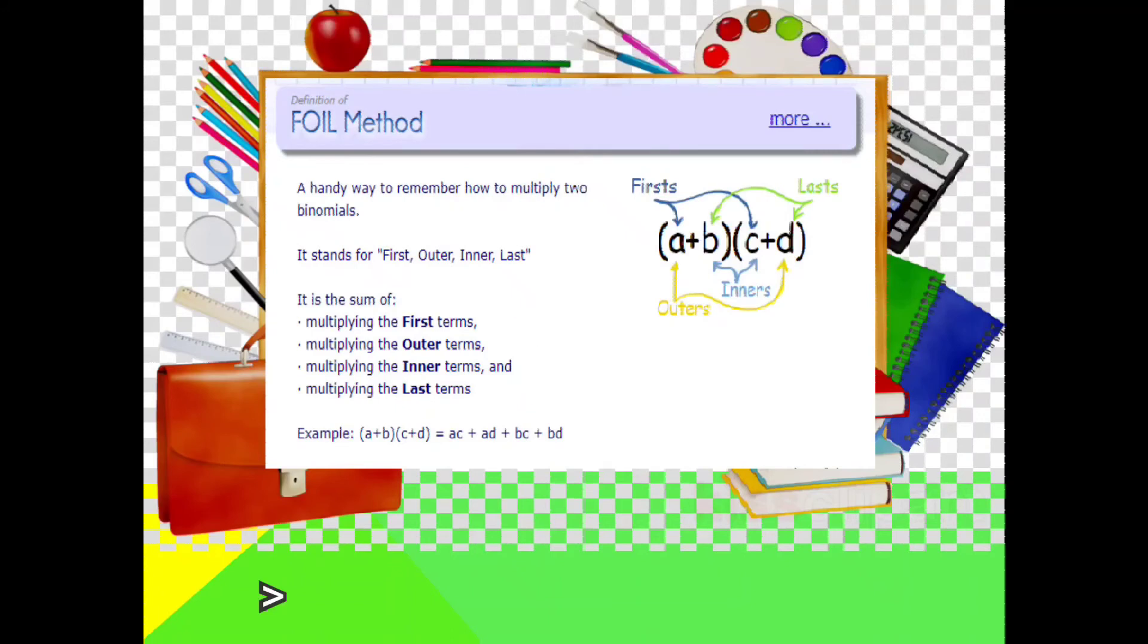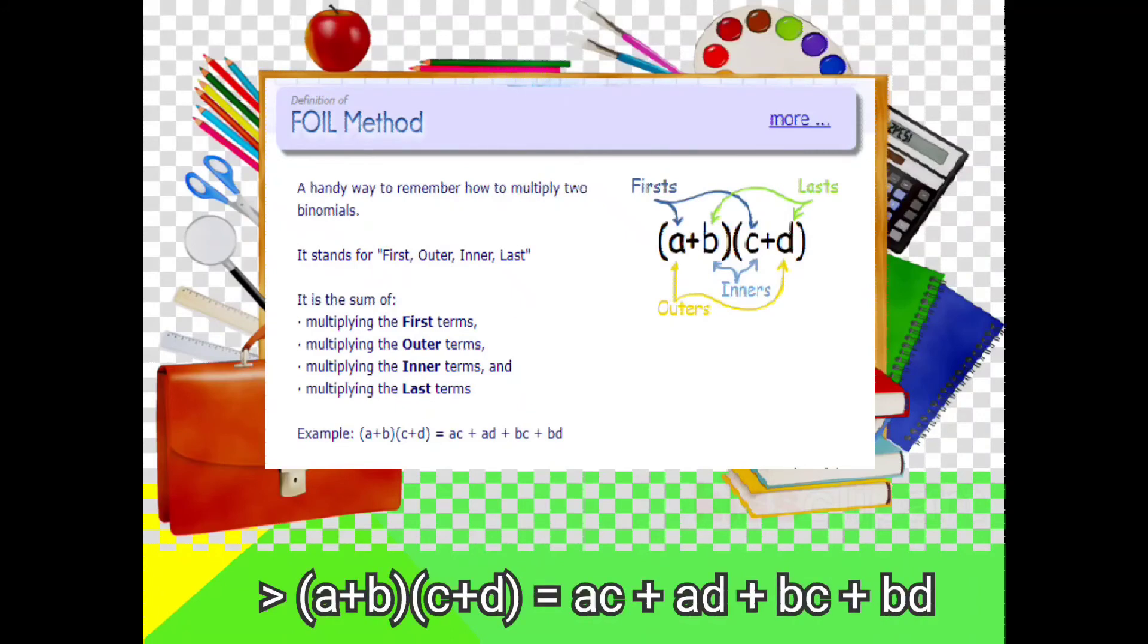Example, a plus b times c plus d. So a times c is equal to ac, that is the first term. Then a times d is equal to ad, that is the outer terms. Then b times c is equal to bc, that is the middle term. Then b times d is equal to bd, that is the last term.